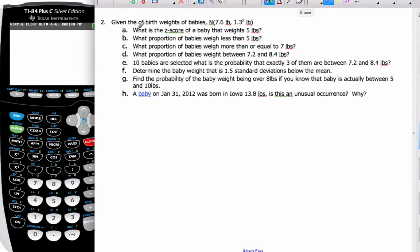In this problem, we're given the birth weights of babies is normally distributed with a mean of 7.6 pounds and a standard deviation of 1.3, or variance of 1.3 squared.